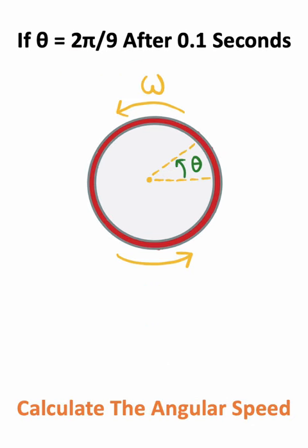In this problem, we are given a ring that is rotating at a constant speed. If the ring rotates 2π/9 radians after 0.1 seconds, what is the angular speed of the ring?